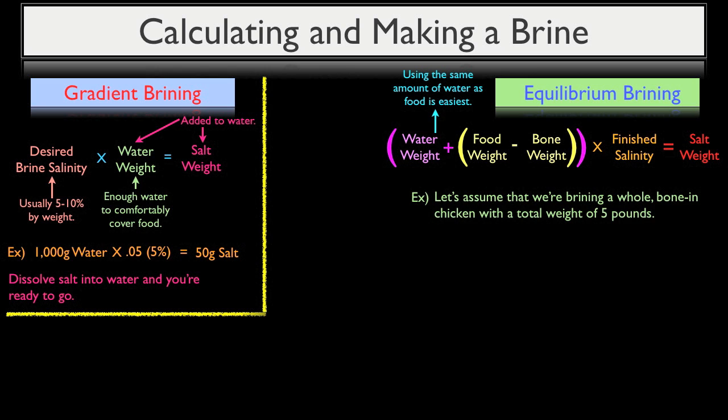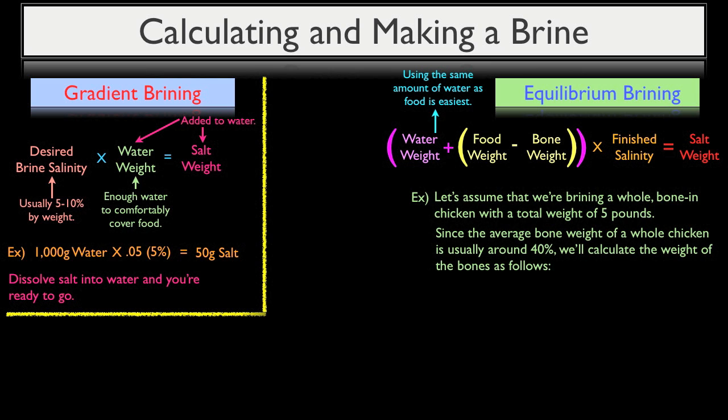For example, let's assume that we're going to brine a whole bone-in chicken with a total weight of 5 pounds. Since the average bone weight of a whole chicken is usually around 40%, we'll calculate the weight of the bones as follows: 5 pounds times 0.4, or 40%, equals 2 pounds of bone weight. So then our actual flesh weight is obviously 3 pounds.